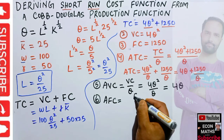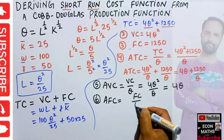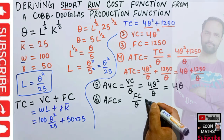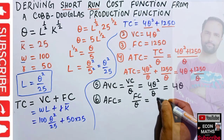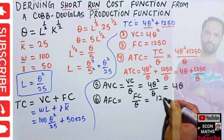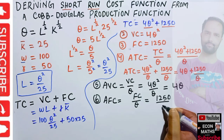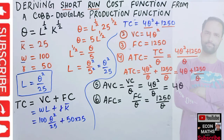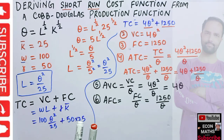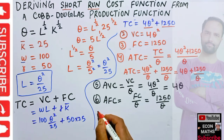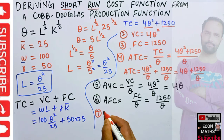The sixth kind of cost is average fixed cost, which is simply fixed cost divided by output. Our fixed cost is 1250, so average fixed cost equals 1250/Q.